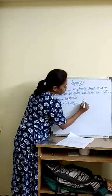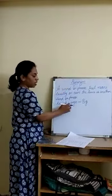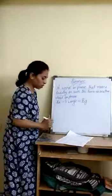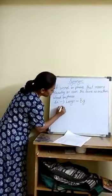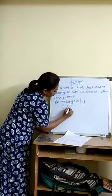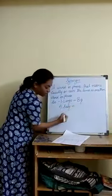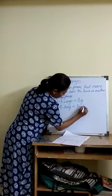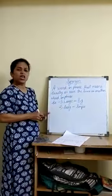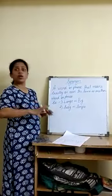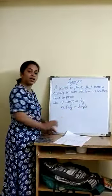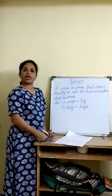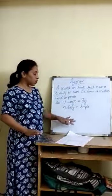The first synonym example is 'large' — equal to 'big'. Large and big have the same meaning. Next is 'easy' — equal to 'simple'. For example: How is your exam? It was very easy. The question paper was very simple. Easy and simple mean the same thing.